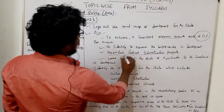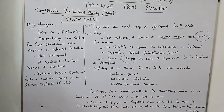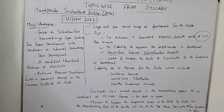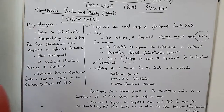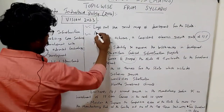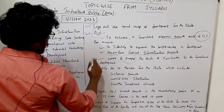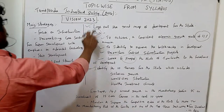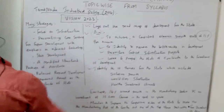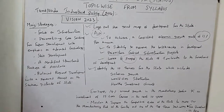We want to propel the state of Tamil Nadu to the forefront of development. This is the fourth aim and it is the most important. This topic can come for 3 mark, 8 mark, 15 mark, and maybe 13 mark questions.